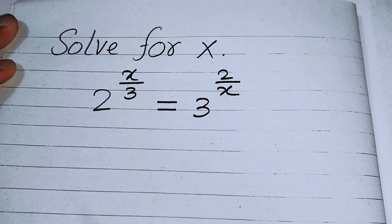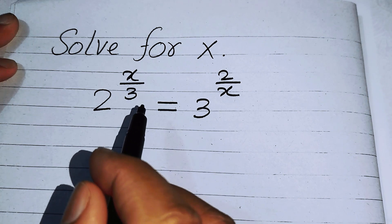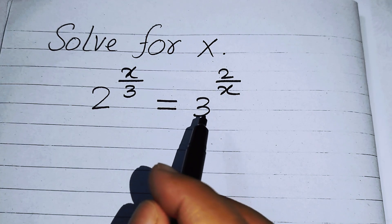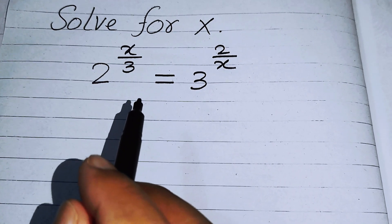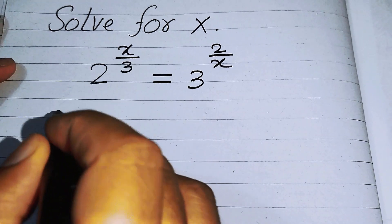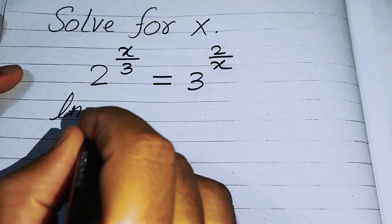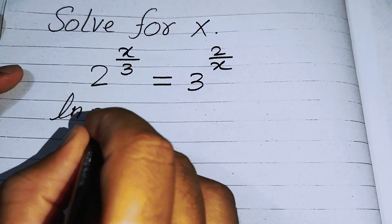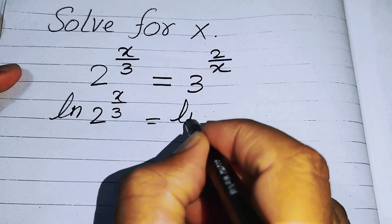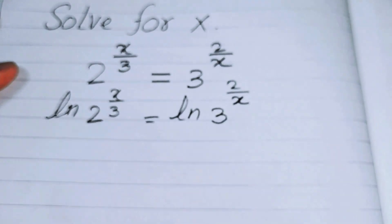Hello everyone, welcome back to the Map of Mathematics. Solve for x if we have 2 to the power of x over 3 is equal to 3 to the power of 2 over x. We will find the value of x in this problem. The very first thing we are going to do is take natural log on both sides, so the expression becomes log of 2 to the power of x over 3 equals log of 3 to the power of 2 over x.